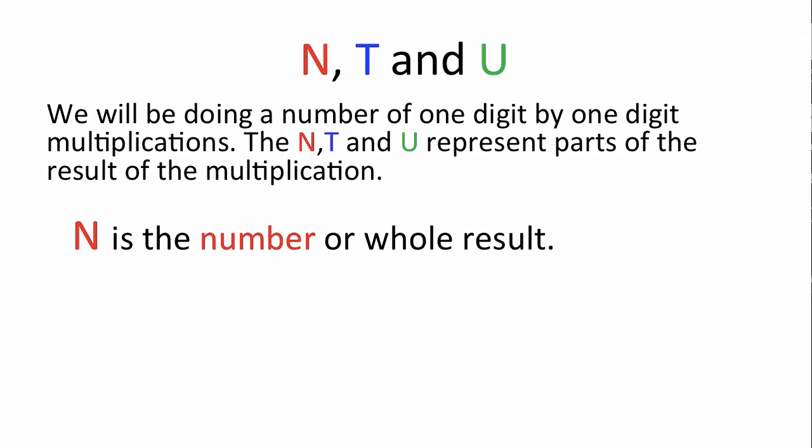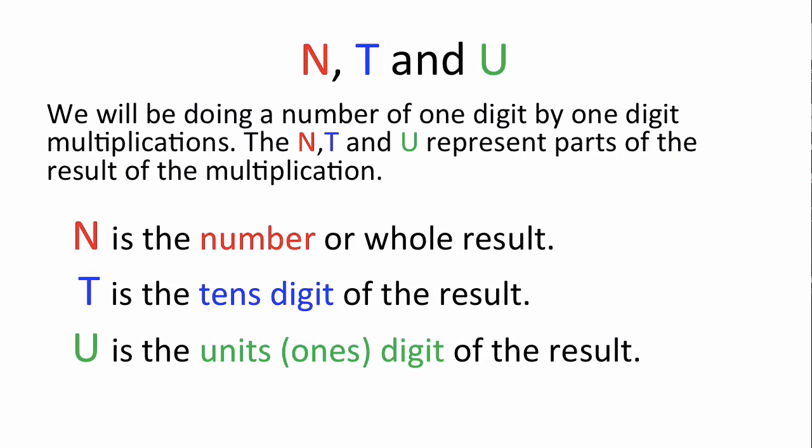The N is the number or whole result, as in both digits of the result. T is the tens digit of the result, and U is the units or ones digit of the result.